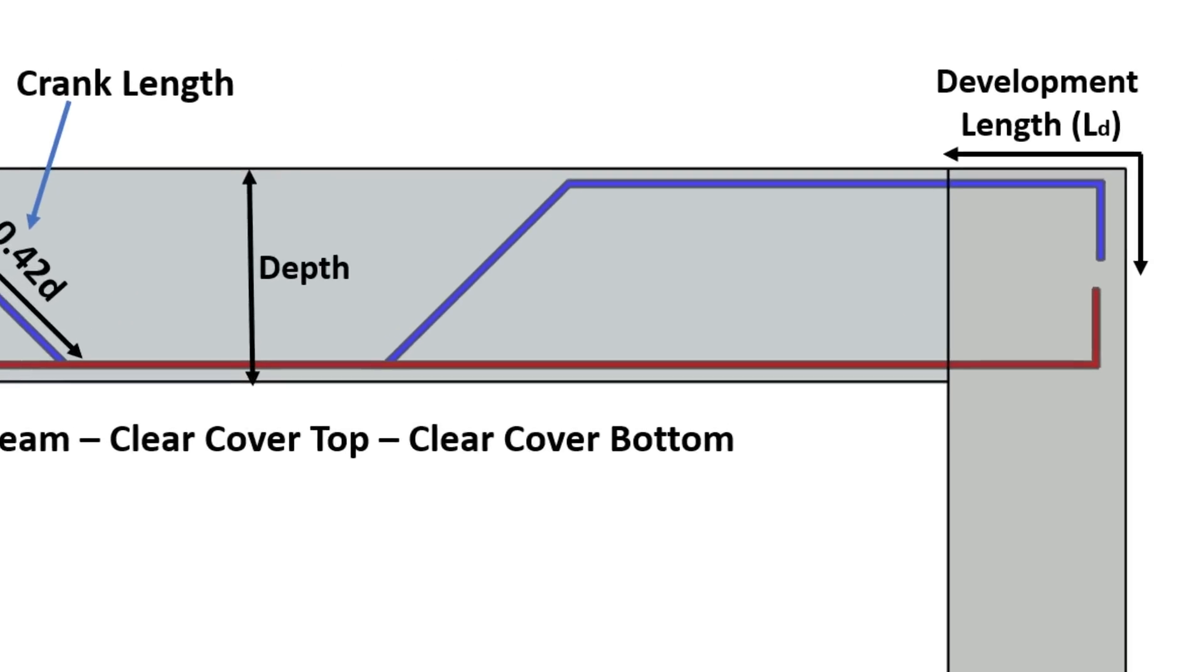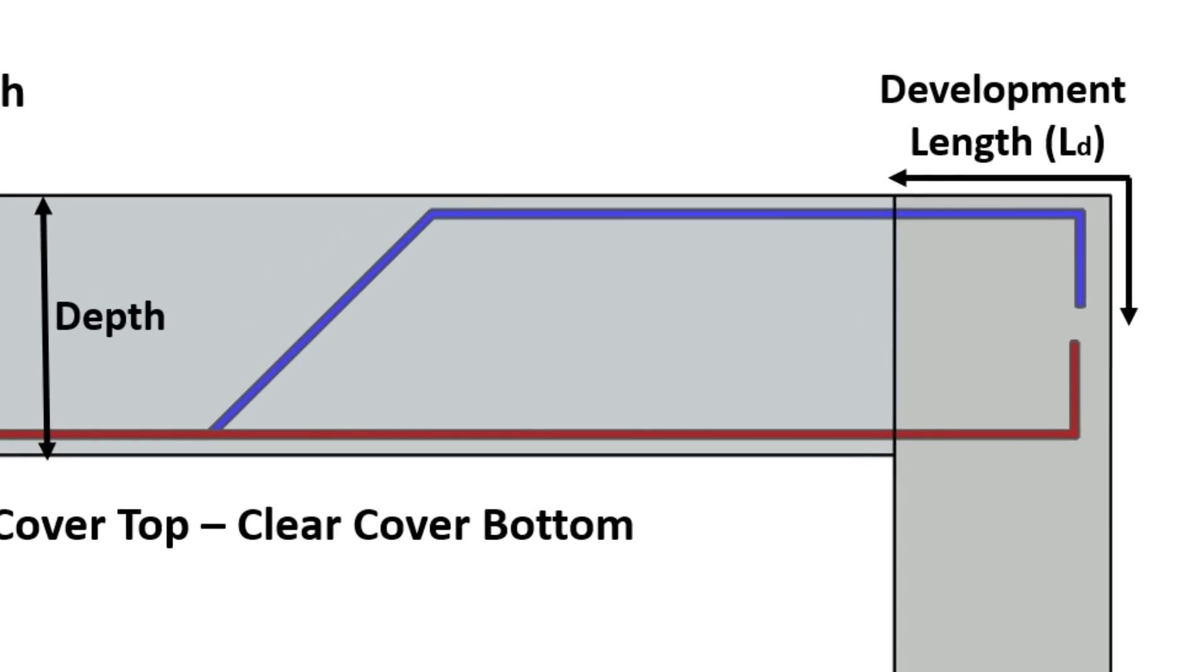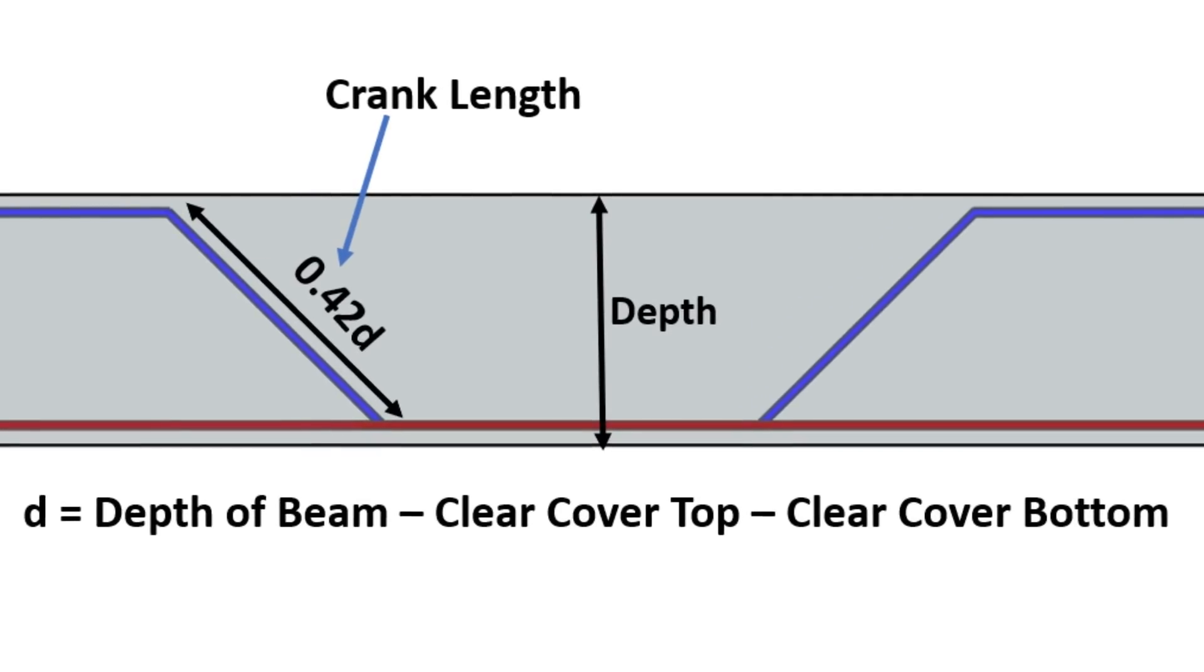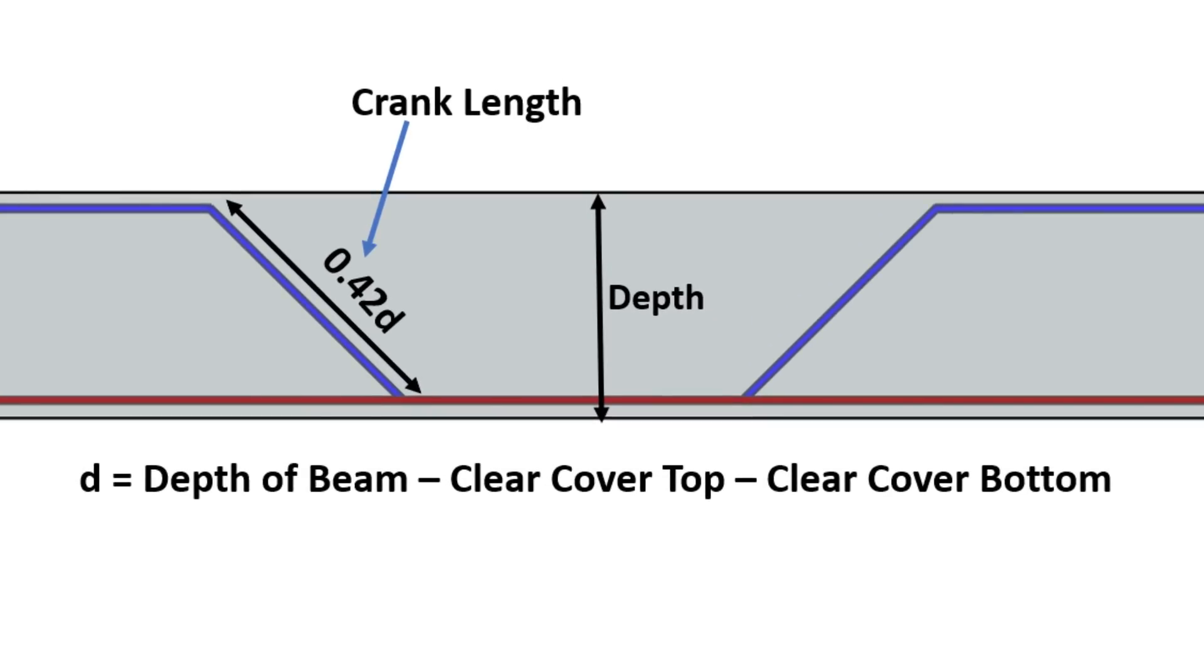The segment of the bar inside the column is known as the development length and is denoted by LD, while the inclined length is termed as crank length. The crank length can be calculated using the formula 0.42D, where D represents the beam's depth, minus the clear cover for the top and bottom.